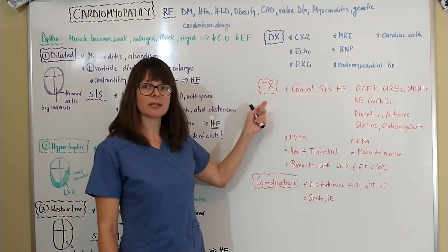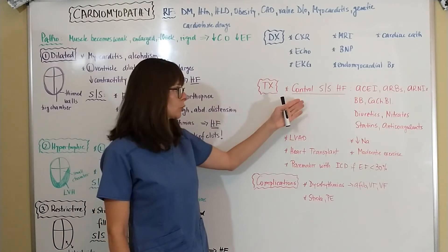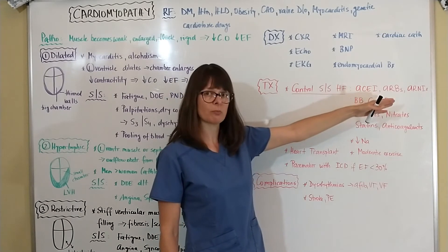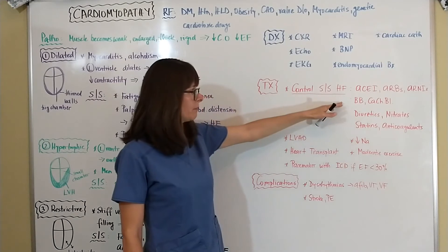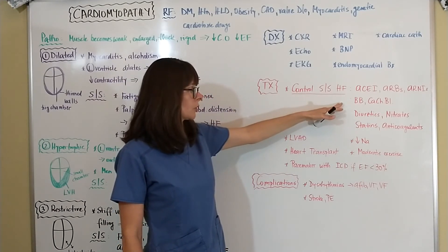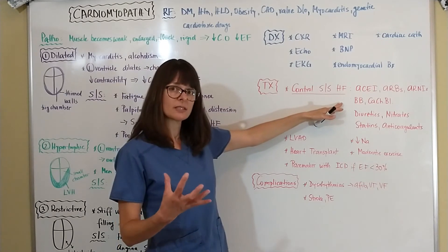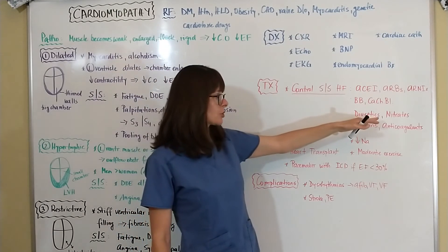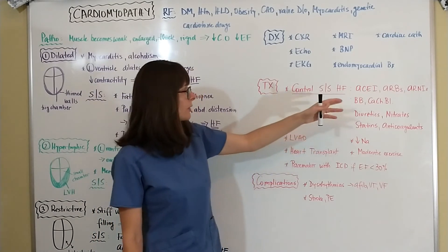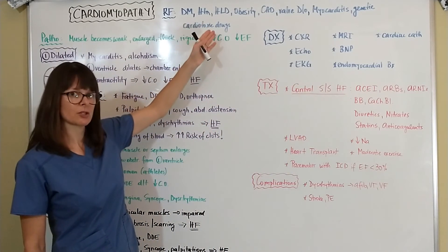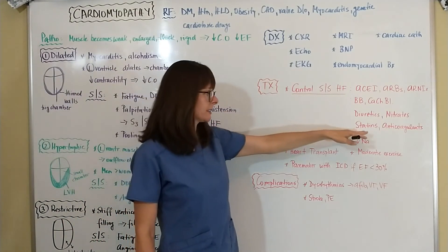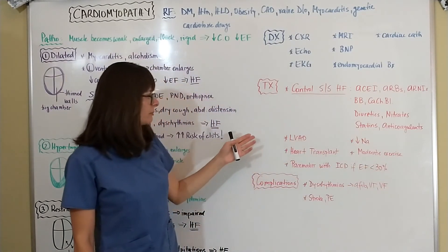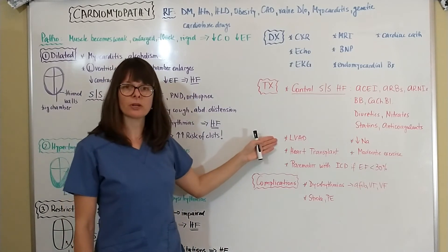Treatment focuses on controlling heart failure signs and symptoms with ACE inhibitors, ARBs, or ARNIs — the latest in heart failure treatment. Beta blockers and calcium channel blockers may be used to control rate and contractility. Diuretics are used for fluid volume overload, and nitrates for angina symptoms. Statins and anticoagulants address underlying causes like hyperlipidemia and prevent clot formation.